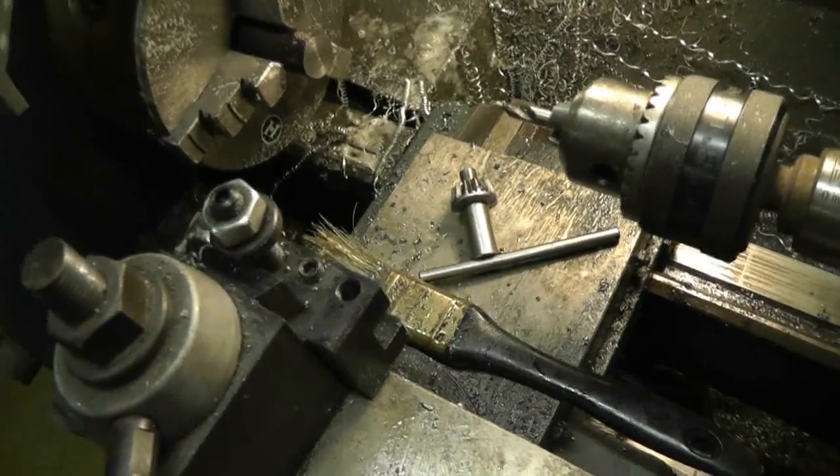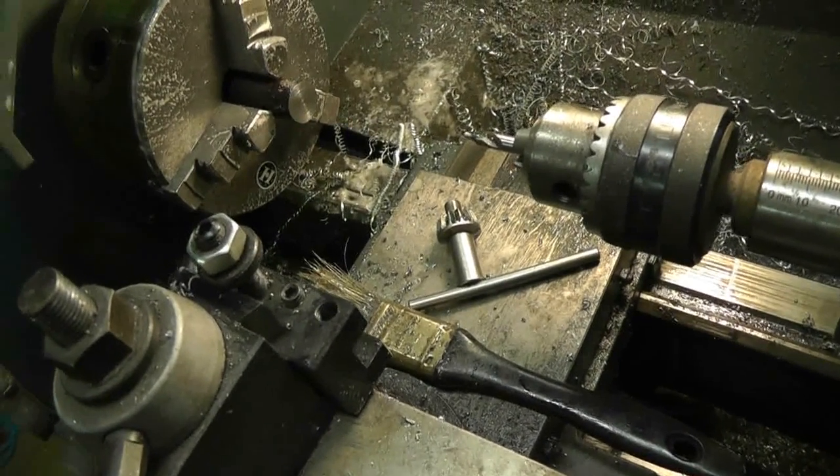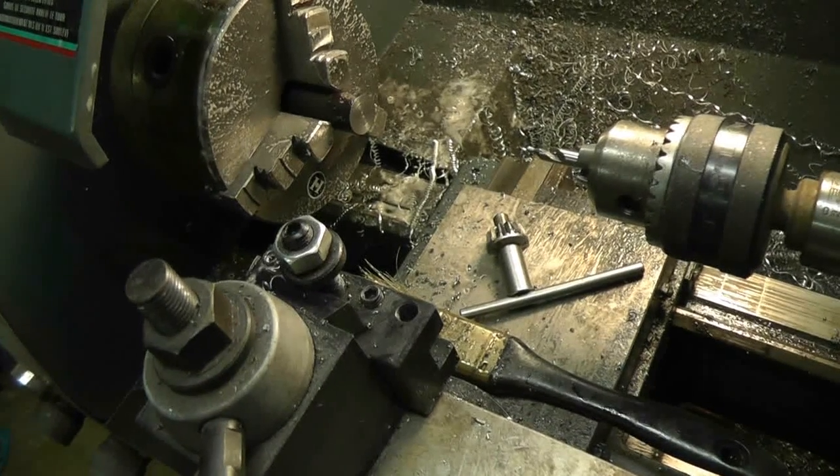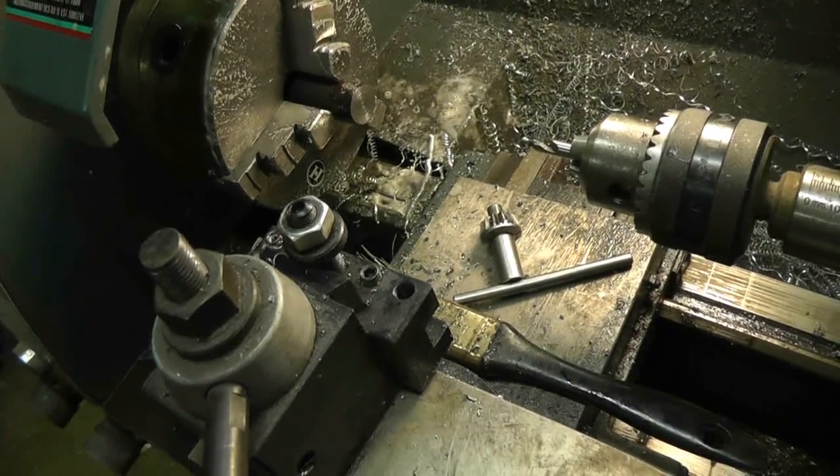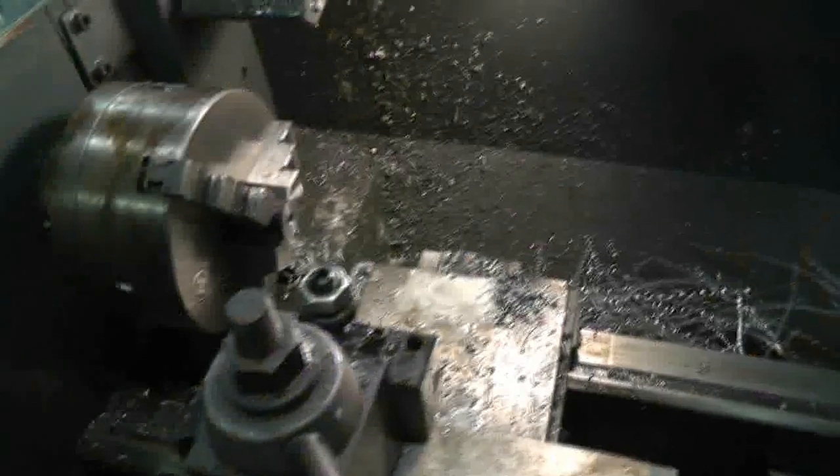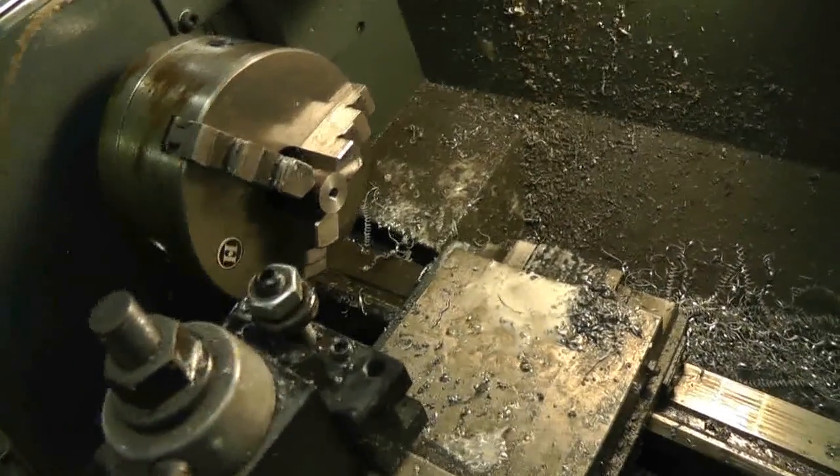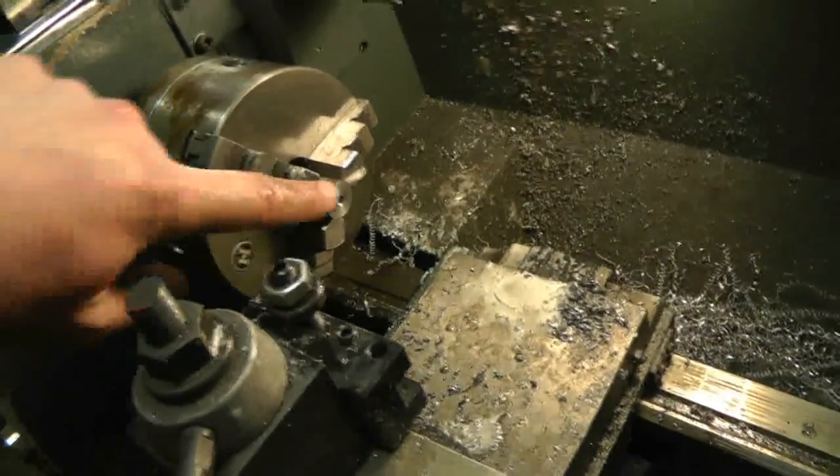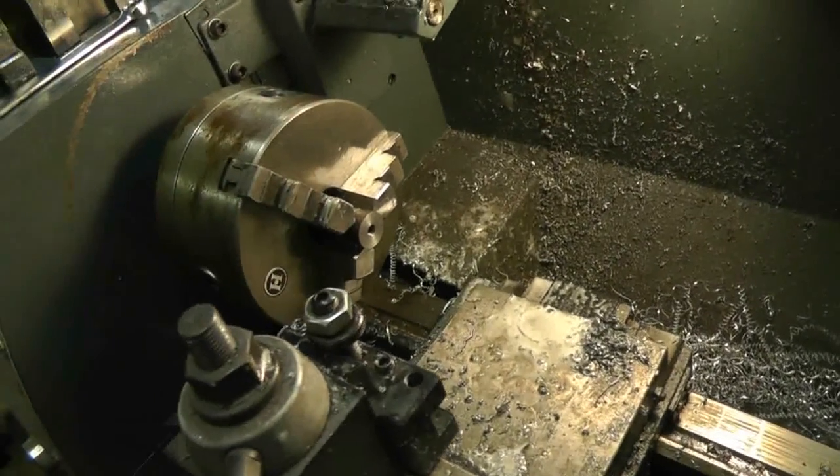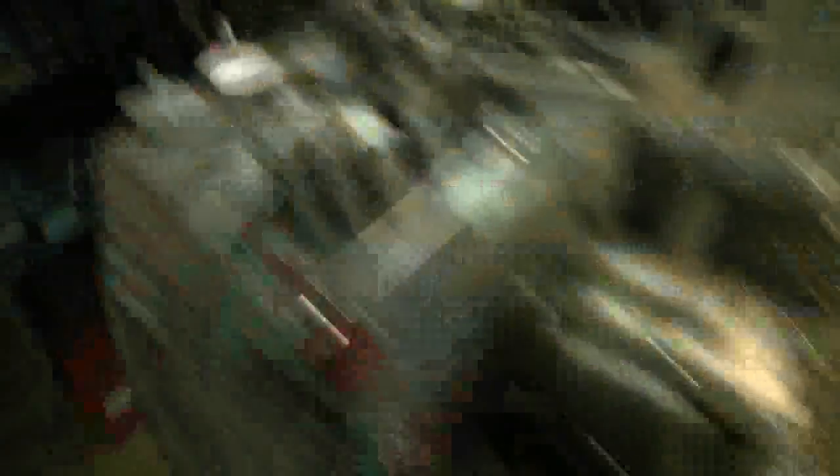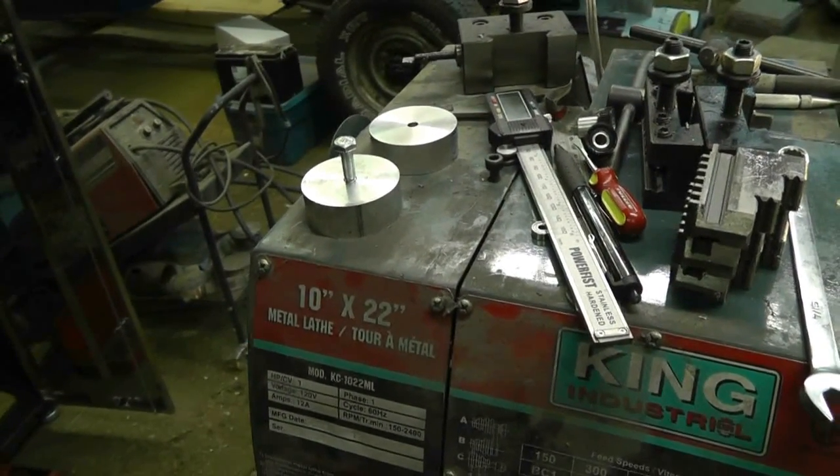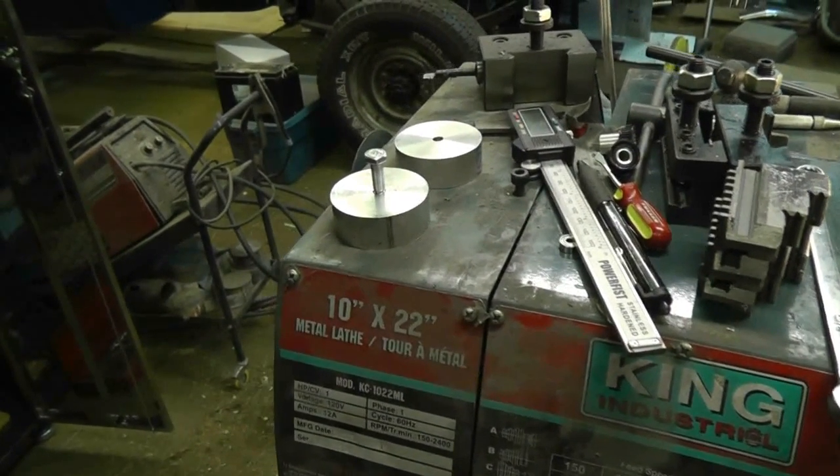Now I'm going to swap in the other set of jaws for the chuck and turn this into a little mandrel to support these when I mill out the channel on them. So I faced off both ends of my blank, and now I'm going to center drill it. Then I'll step drill it to the tap diameter for quarter inch. I put a tap in the tail stock and manually turned the lathe to thread it.